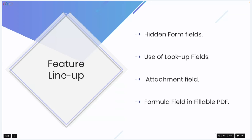We are thrilled to share that we have an array of exciting new features to be released in the near future. The first one is Hidden Form Fields — this option will allow you to hide certain fields from responders. If you're having an internal ID for a particular submitter which is not to be revealed, you'll be able to use hidden fields. The next one is Lookup Fields — lookup fields will allow you to dynamically populate field options and values from a CSV file. Once the required field is selected, all other fields in the form will be filled based on the user's selection. For example, if there is a vehicle service company where a technician enters their customer ID, then all the data related to the customer will be auto-populated in the document.